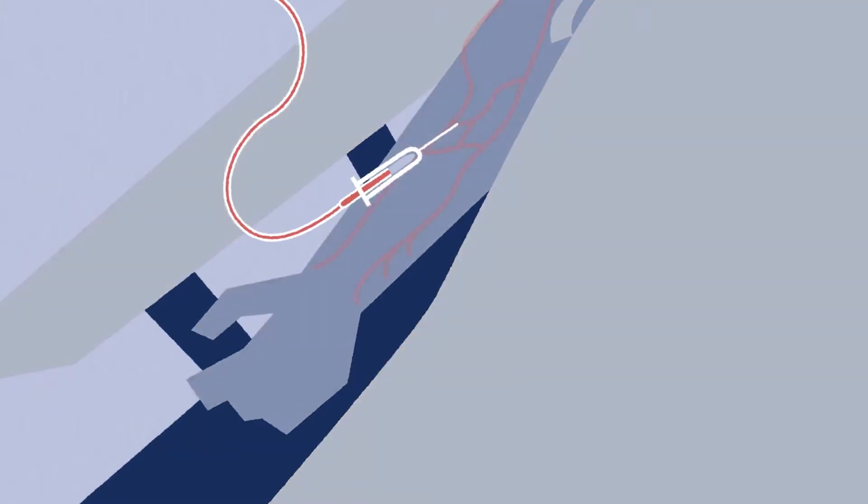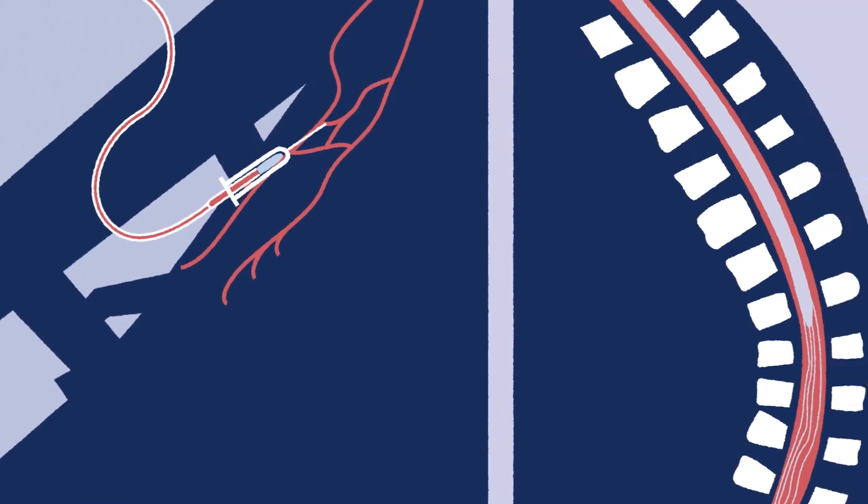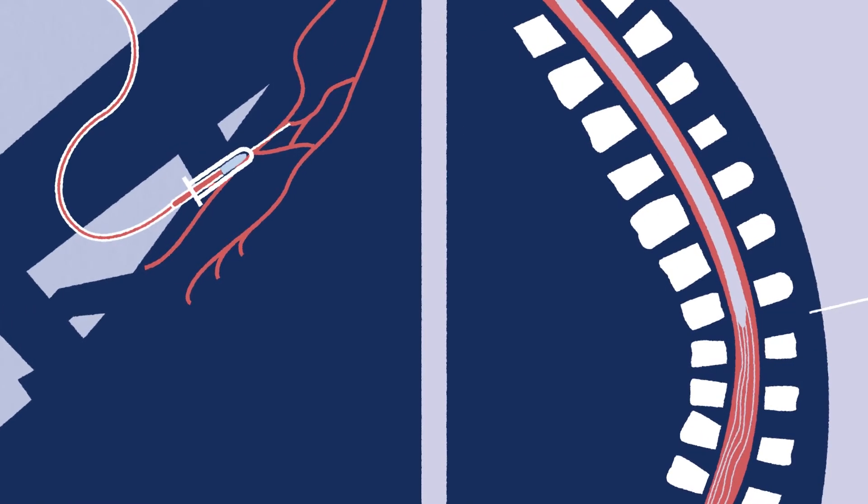If the sample is blood, it is collected from a vein. If the sample is cerebrospinal fluid, it's collected from the fluid around the spine via a procedure called lumbar puncture or spinal tap.